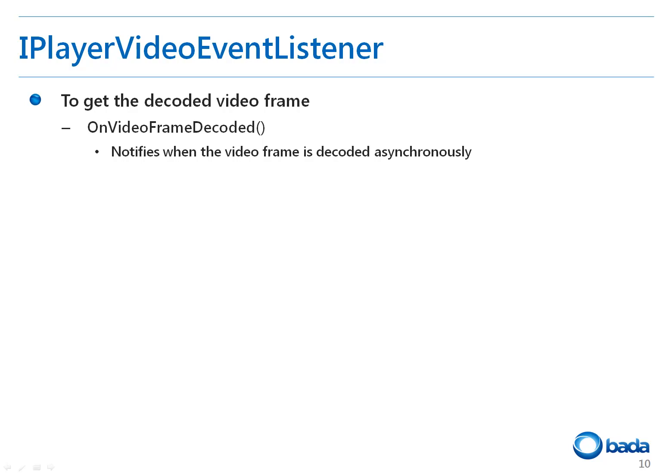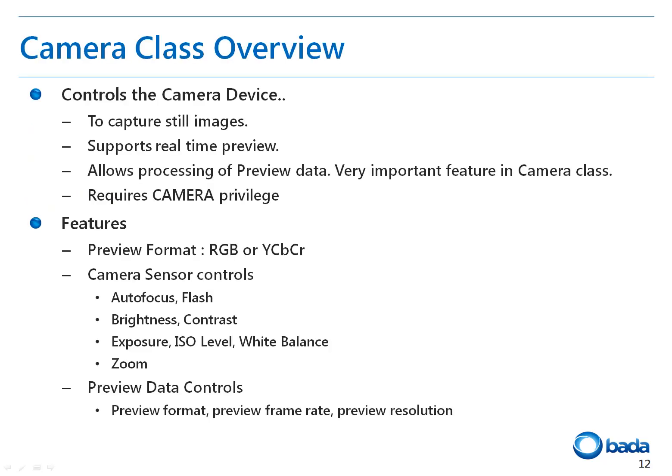Programmatic control of the device camera is quite essential in smartphone development. In the coming slides, I will explain what features are provided in Bada to exploit the device camera. The camera class provided by Bada belongs to the camera privilege group. The basic functions of the camera are taking a picture and providing a real-time preview. The camera supports RGB and YCBCR color formats, provides control functions for autofocus and flash, and provides adjustment functions for brightness, contrast, exposure, ISO level, and white balance.